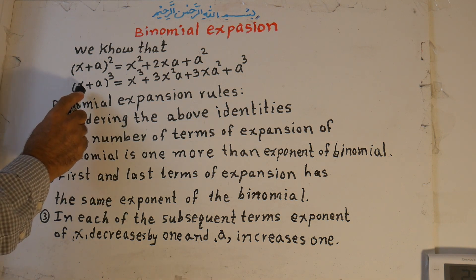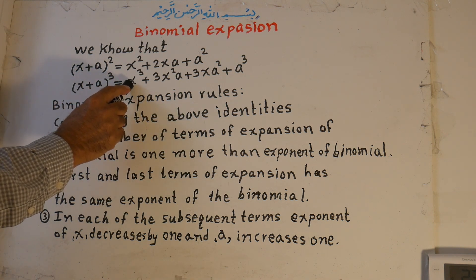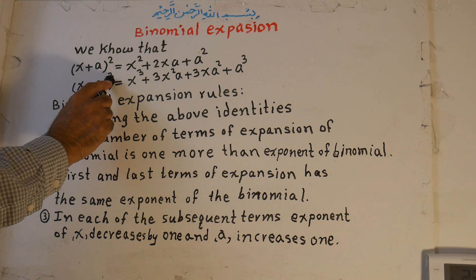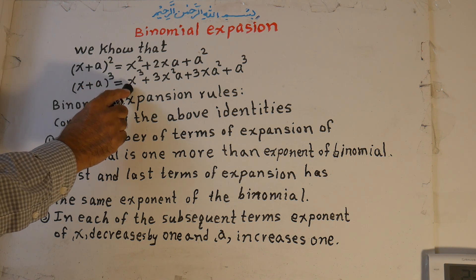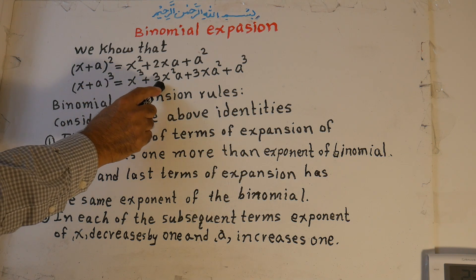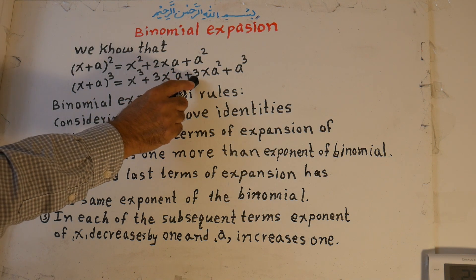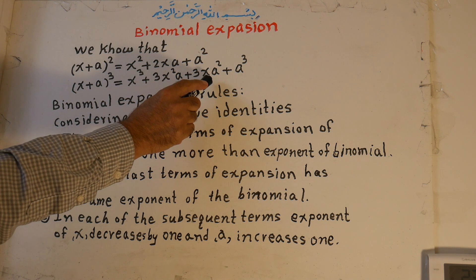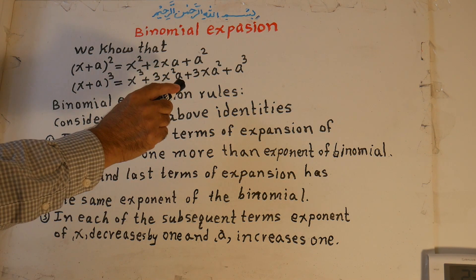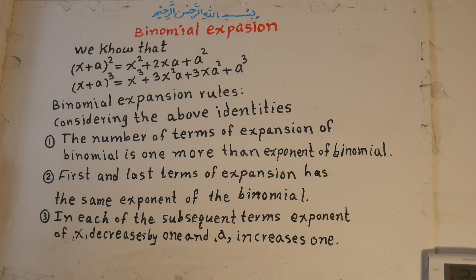And x plus a to the power of 3 is equal to x to the exponent of 3 plus 3x squared times a plus 3x times a to the power of 2 plus a to the power of 3. From here we have the binomial expansion rules.